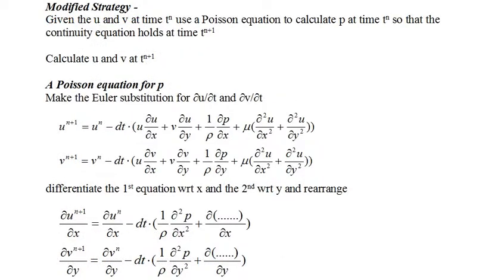Fortunately, there is an easy ad-hoc approach that provides solutions to both problems. We will derive a Poisson equation for calculating the value of pressure at time t_n given the values of u and v at time t_n. And the solution to the Poisson equation for pressure at time t_n will enforce the continuity equation at time t_{n+1}. So let's see how this works.